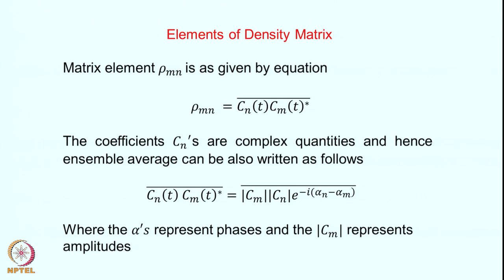The coefficient C_n is a complex quantity and hence the ensemble average can also be written as follows. Representing the coefficients as complex quantities with amplitude and phase: C_n(t) = |C_n|·e^(iα_n), and since C_m* has a minus sign, C_n·C_m*(t) = |C_m||C_n|·e^(i(α_n - α_m)). Here the α's represent the phases and the |C|'s represent the amplitudes. Each matrix element therefore has an amplitude and a phase.